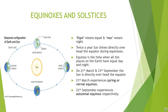Let us understand the seasonal configuration of earth and sun. Twice a year, the sun shines directly overhead the equator during equinoxes, and once on each tropic during the solstices. Now let us understand equinox first. Equi means equal and nox means night. Equinox is the time when all the places on the earth have equal day and night. On 21st March and 23rd September, the sun is directly overhead the equator. 21st March experiences spring or vernal equinox, whereas 23rd September experiences autumnal equinox.